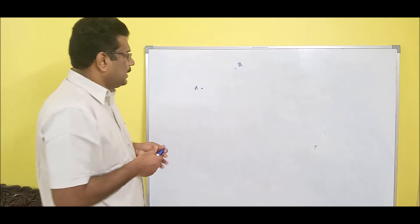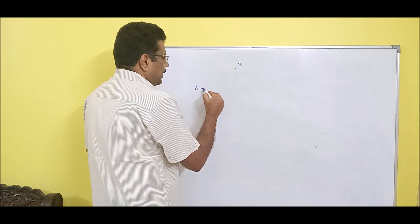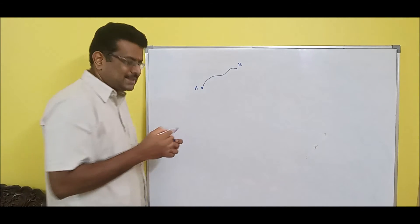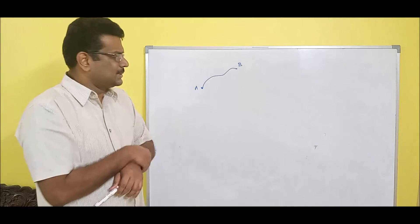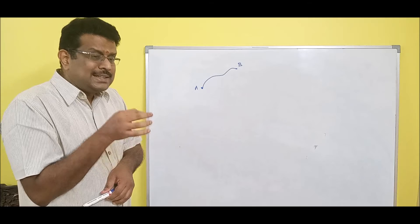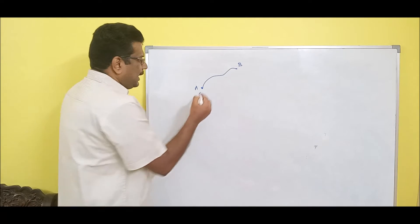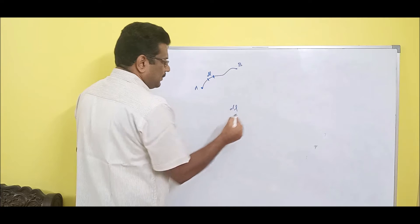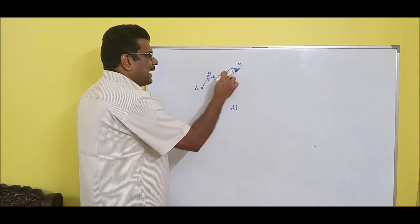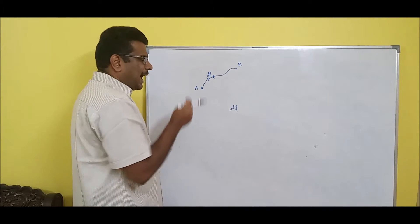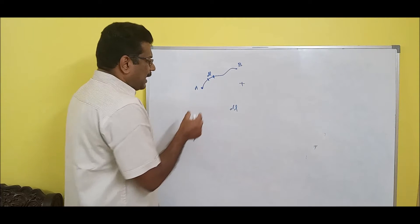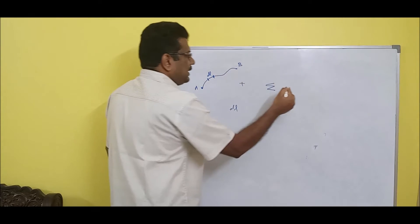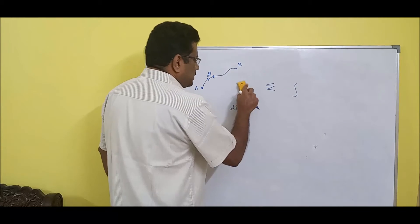In case the path from A to B is curved, you can't take a scale and measure, because there is a variation — there is a change. So what is the engineering approach? Take a small elemental length DL, and try to move from A to B and add everywhere. Addition in discrete domain is summation. If you try to move in a smooth path, it is integration. Please remember: summation is addition in the discrete domain, and integration is addition in the continuous domain.